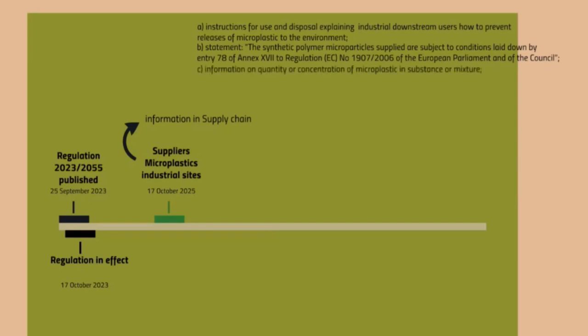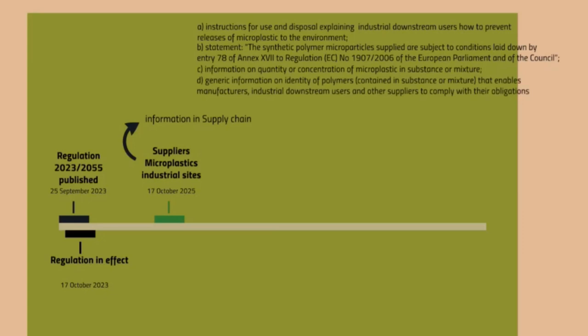There also has to be information on the quantity or concentration of microplastics in the substance or mixture, and a general identification of the polymers used — enabling manufacturers, industrial downstream users, and other suppliers to comply with their obligations. A useful tool to combine all this information is the safety data sheet.